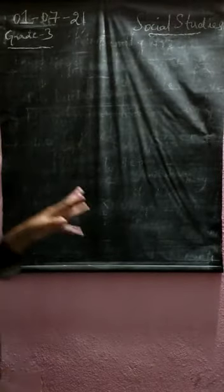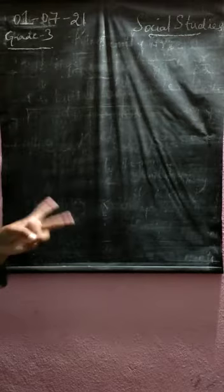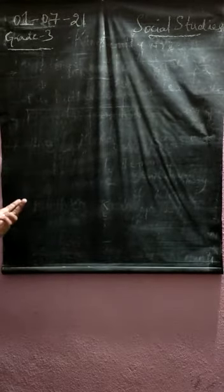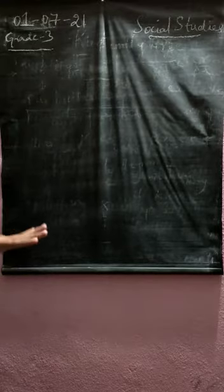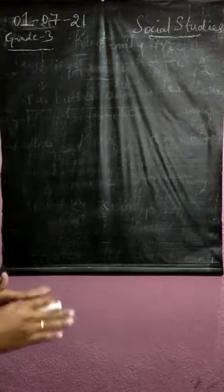So we have come across three kinds, three types of families: nuclear family or the small family, joint family or the big family in normal language, and single parent family where the mother or the father takes care of the child.